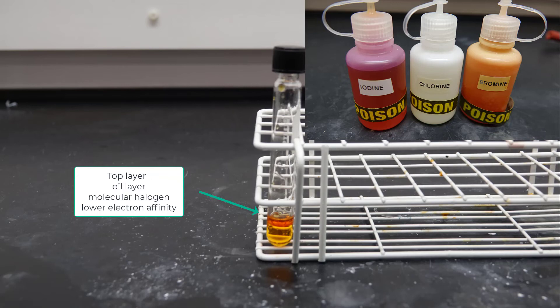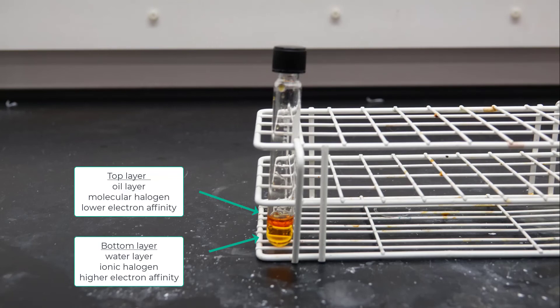Remember that the halogen that ends up as a molecule, the one you'll see in that oil layer, is the one with the lower electron affinity. The other halogen must be in the water layer in ionic form, and those were all colorless. Whichever halogen it is, is the one with the higher electron affinity.